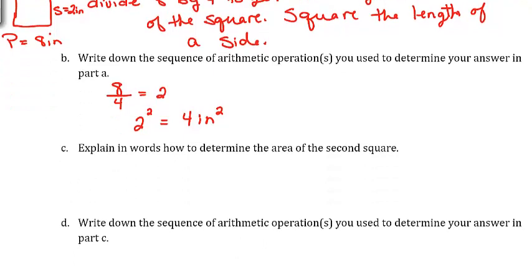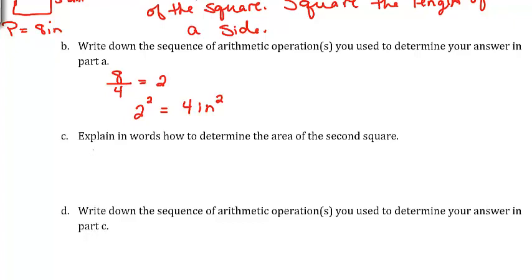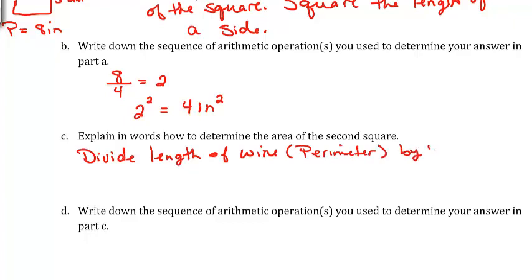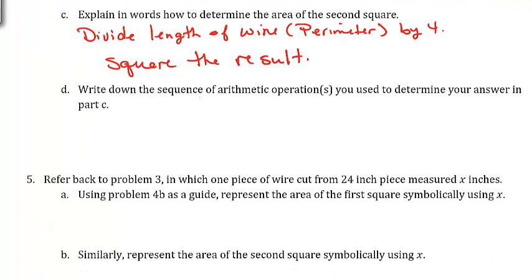For the second square, we're going to take the length of the wire and divide it by 4 to get the side length, then square the result. The length of wire is 16. We divide that by 4: 16 divided by 4 is 4. Then we square that answer, giving us 16 inches squared.